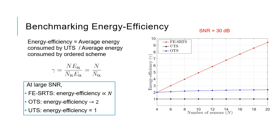Now we benchmark energy efficiency, defined as the ratio of average energy consumed by the unordered scheme to that of the ordered scheme — which reduces to the ratio of the number of sensors to the average number of transmissions of the ordered scheme. I have plotted energy efficiency as a function of number of sensors for SNR = 30 dB. In red is FESRTS, in black is UTS, and in blue is OTS. At large SNR, FESRTS energy efficiency is proportional to the number of sensors. For OTS, efficiency saturates near 2, and for UTS it equals 1.